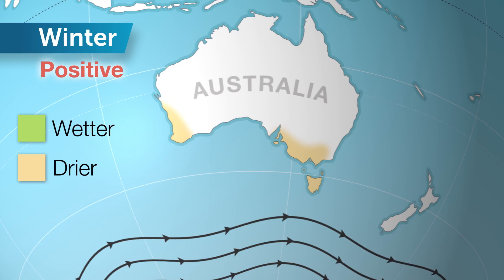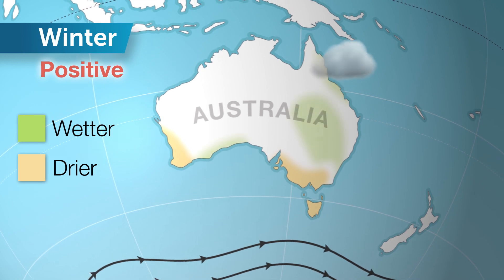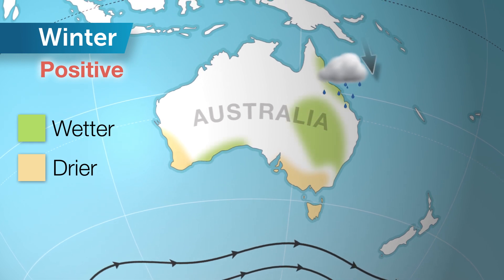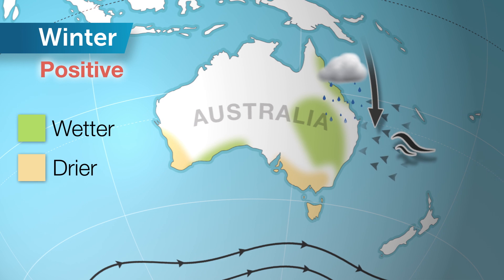This shift south in the weather systems is called a positive SAM. But a positive SAM can also mean parts of the east coast get wet, as it draws more tropical air southwards and allows more onshore easterly winds than normal.